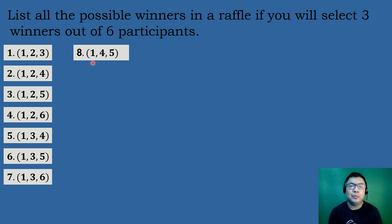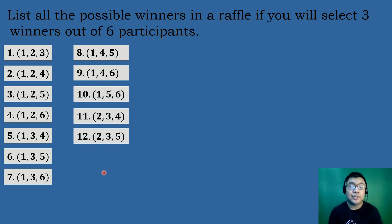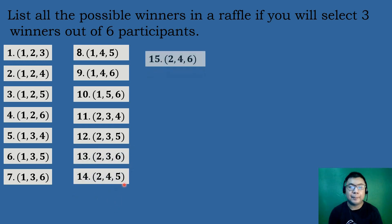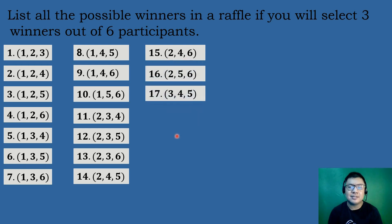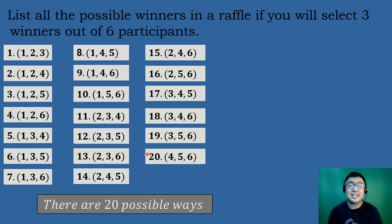Continuing: {3,4,5}, {3,4,6}, {3,5,6}, and finally {4,5,6}. Therefore, there are 20 possible winners in the Arapol if we select 3 winners out of the 6 participants.